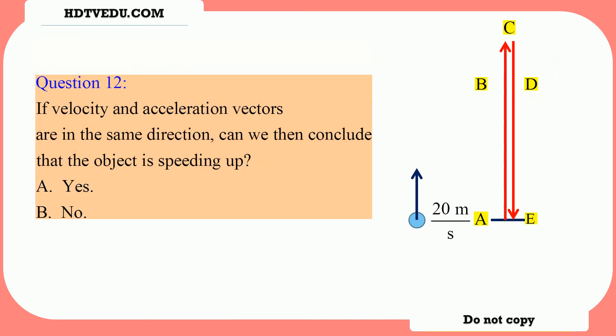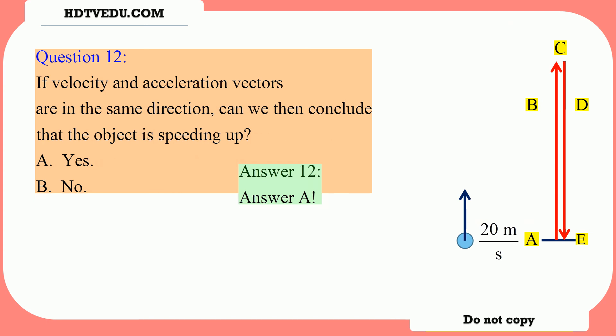Question number 12: If velocity and acceleration vectors are in the same direction, can we then conclude that the object is speeding up? From D to E, velocity is along negative Y and acceleration due to gravity is along negative Y — both are in the same direction — so it speeds up. Answer is yes.